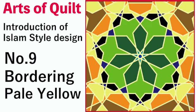First of all, the bordering is a pale yellow. It's the image of an overflowing light.